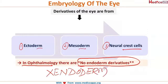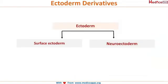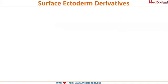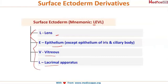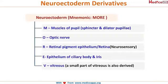Ectoderm is further divided into surface ectoderm and neuroectoderm. For surface ectoderm, use the mnemonic LEVEL: L stands for the lens, E for epithelium, V for vitreous, and L again for lacrimal apparatus. The two L's are lens and lacrimal apparatus, E is for epithelium, and V is for vitreous.